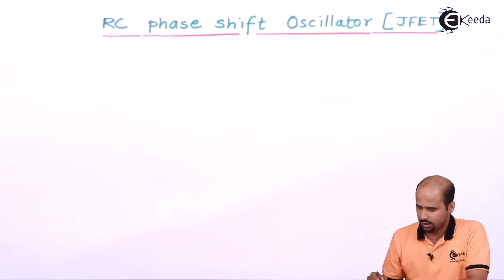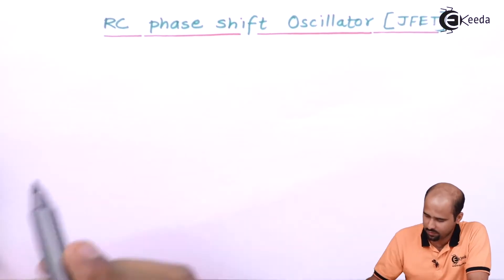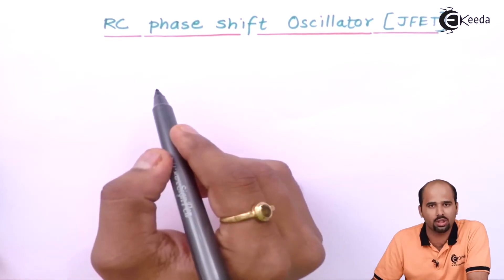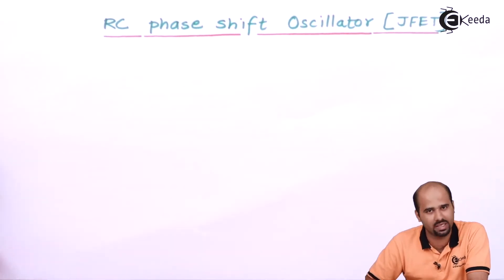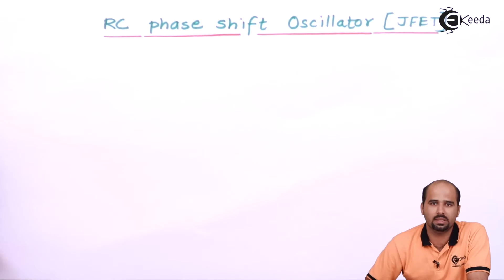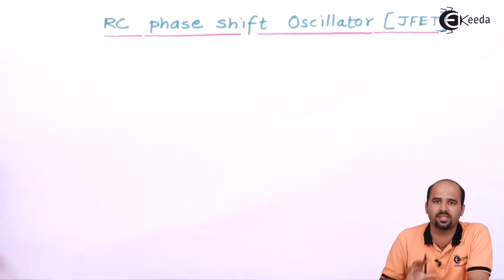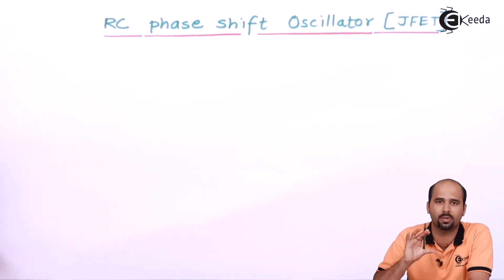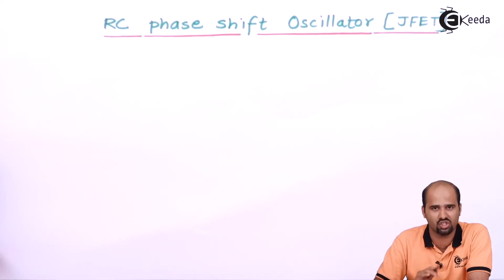Here on this particular screen I will first draw the JFET-CS amplifier. Then we will be drawing the complete feedback circuit, and that combined comprises the oscillator.